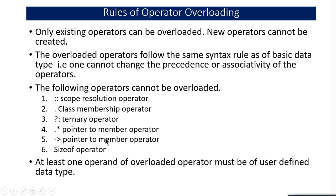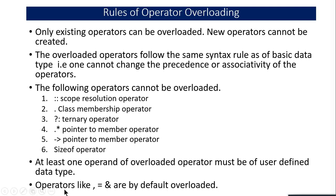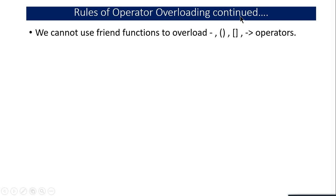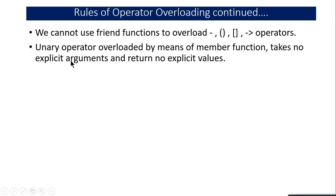When overloading operators, at least one of the operands must be of a user-defined data type — the other can be an integer, but one must be an object. Operators like equals-to, ampersand, and comma are by default overloaded because they can work for both user-defined and basic data types. You can also use friend functions mixed with operator overloading.